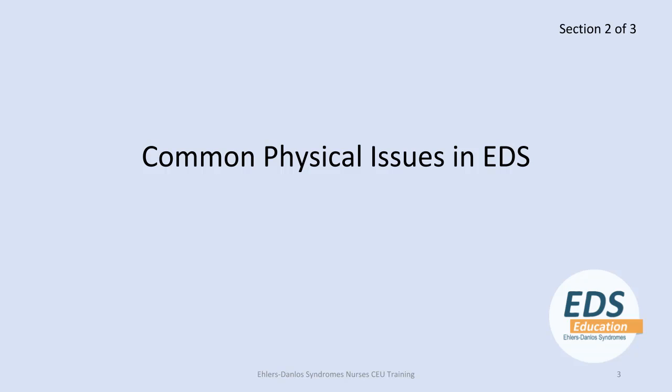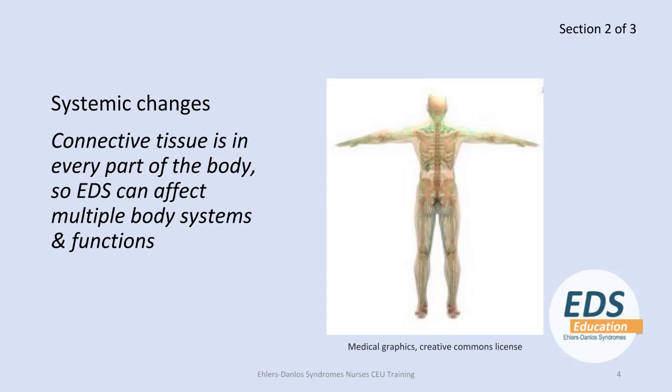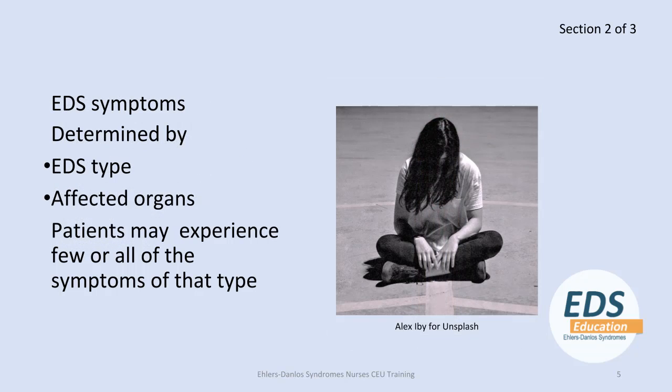There are 13 types of EDS and each has its specific symptoms, though there are several common physical issues that overlap all types. EDS is a group of connective tissue disorders, and because connective tissue is in every part of the body, EDS can affect multiple body systems and functions. The type of EDS a patient has will usually affect specific organs, resulting in a group of similar symptom manifestations. However, it is not uncommon for symptoms to overlap between the different types. Within each type, each patient may exhibit one or all of the symptoms in that symptom group.